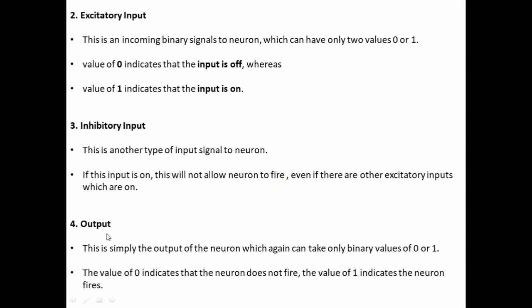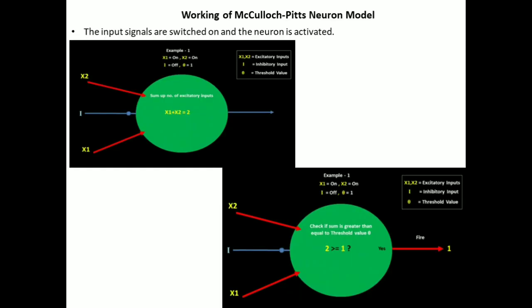The last component is Output. This is simply the output of a neuron, which again can take only binary values — that is, 0 or 1. The value 0 indicates that the neuron did not fire, and the value 1 indicates that the neuron has fired. To better understand the working of the McCullough-Pitts model, we shall now see the diagrammatical representation.